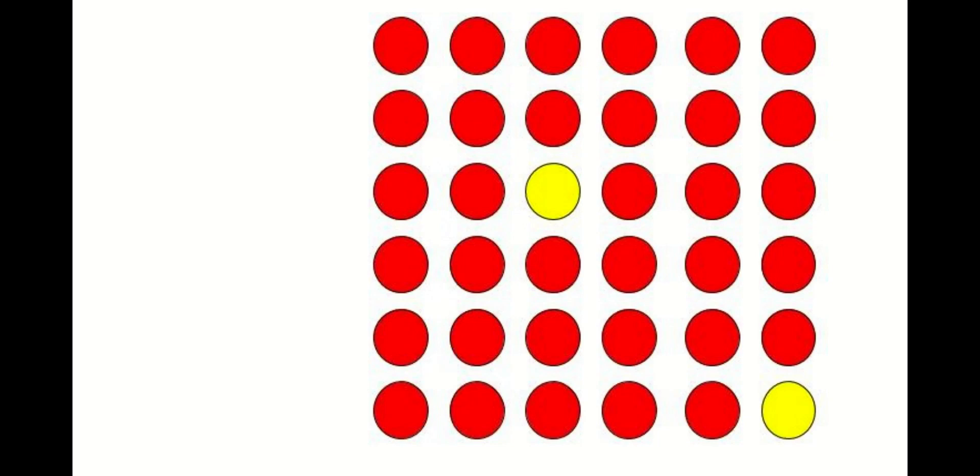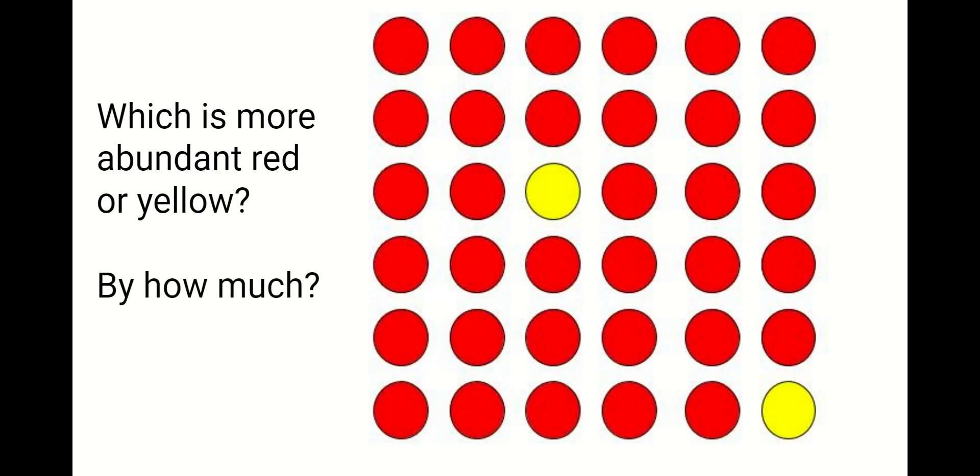How about this one? Which is more abundant, red or yellow? Well you can see there's only two yellow dots and there's 36 dots in all. So there's a lot more red dots than there are yellow.